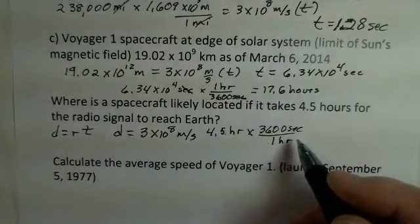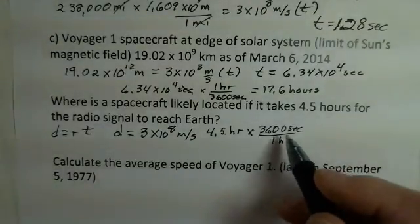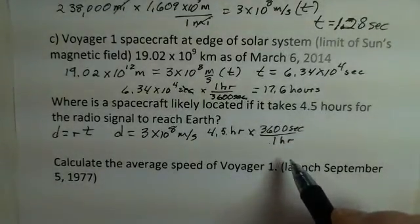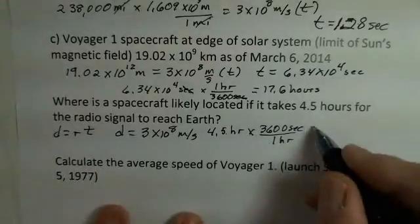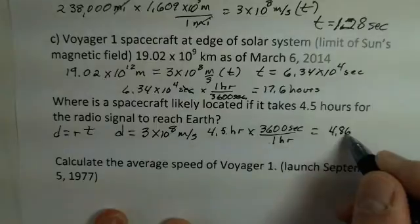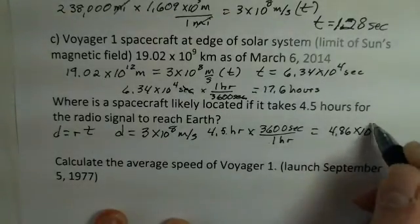And you might want to convince yourself of this. There's 60 minutes in an hour. There's 60 seconds in every minute. Convince yourself. 3,600 seconds per hour. And now I can multiply those two together. And we get a distance here. At least I came up with 4.86 times 10 to the 12th meters.